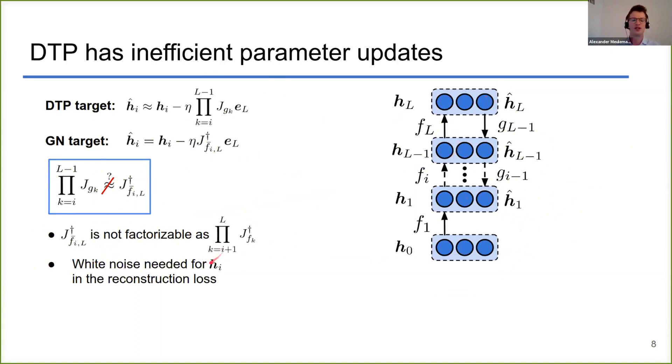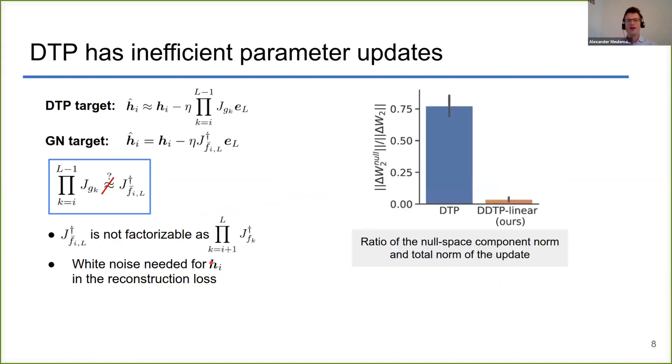Then, more technically, you also need white noise in this reconstruction loss which we don't have in difference target propagation. You might argue it doesn't matter that DTP is not linked to Gauss-Newton anymore as long as it succeeds in doing proper credit assignments. However, we showed both theoretically and empirically that this is not the case because a large proportion of the update of difference target propagation lies inside the null space of the network.